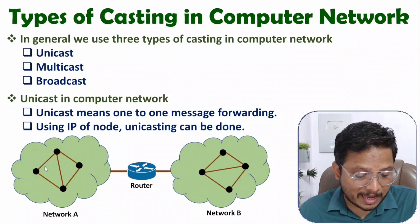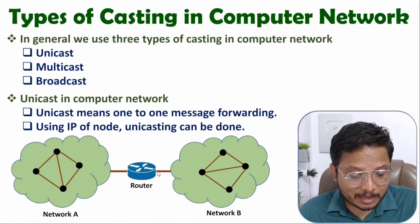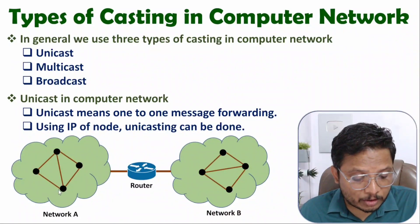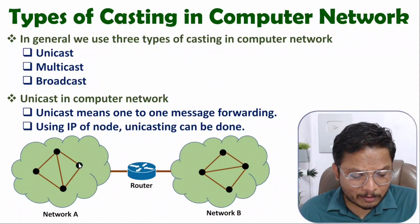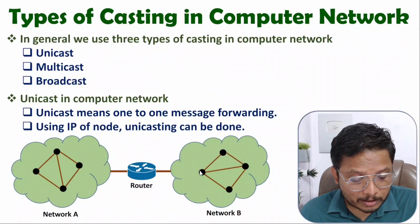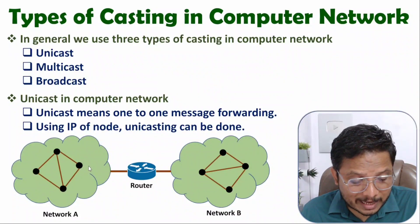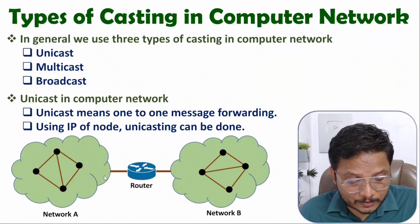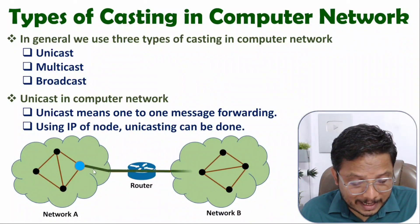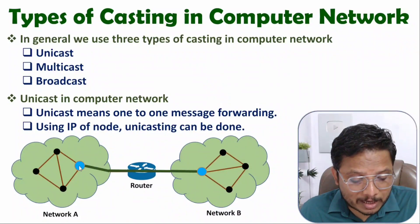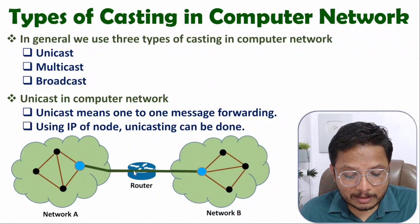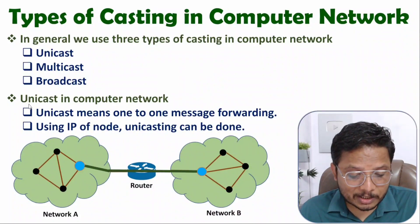For example, here we are having Network A and here we are having Network B. By these black dots you can observe nodes are there — those nodes can be a computer, mobile, anything. Now let us say this node wants to communicate to this node; then this node will have to forward a message with the address, and that address will be the IP address of the destination node. So one-to-one data transmission is happening — that is referred to as unicast.